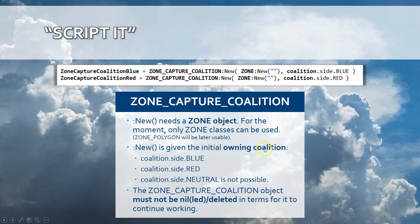The Zone Capture Coalition class constructor needs two parameters. The first parameter is a zone object, and the second is a coalition expression using the structure 'coalition.side' followed by 'blue' or 'red'. You store the result of this constructor into a variable — the object instance of the Zone Capture Coalition class — and then use that variable to capture the different events and state transitions.